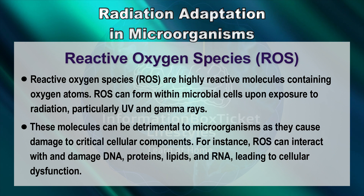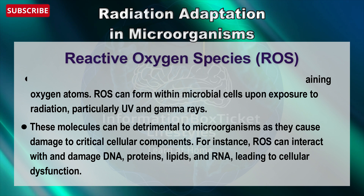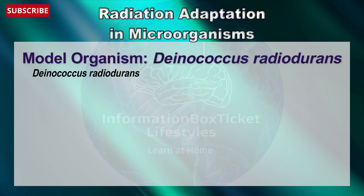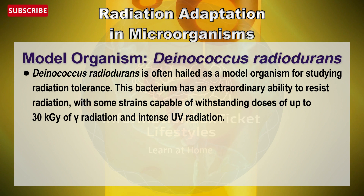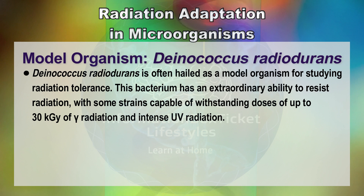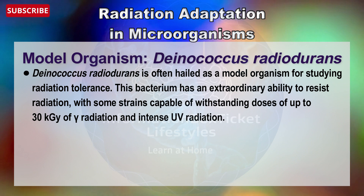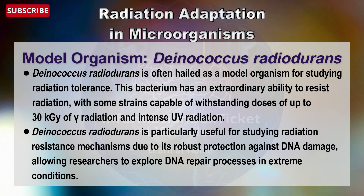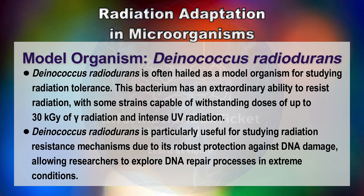Deinococcus radiodurans is often hailed as a model organism for studying radiation tolerance. This bacterium has an extraordinary ability to resist radiation, with some strains capable of withstanding doses up to 30 kilogray of gamma radiation and intense UV radiation. Deinococcus radiodurans is particularly useful for studying radiation-resistant mechanisms due to its robust protection against DNA damage, allowing researchers to explore DNA repair processes in extreme conditions.